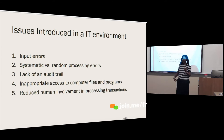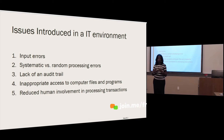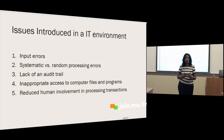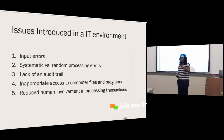You're also concerned about systematic versus random errors. Random errors occur once and aren't linked to any particular system issue. A systematic error, however, occurs and has a broader impact — there's a problem with how the transaction is being processed through the system, and that error spreads throughout the entire system. Systematic errors are more pervasive.